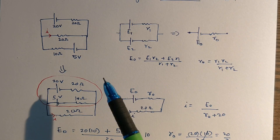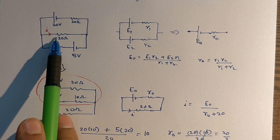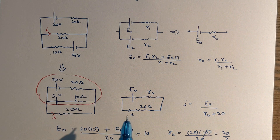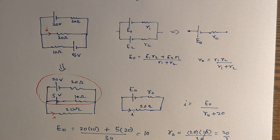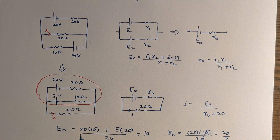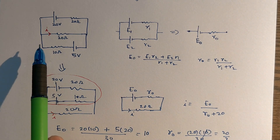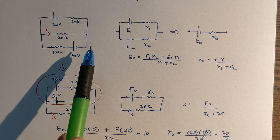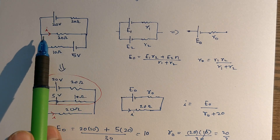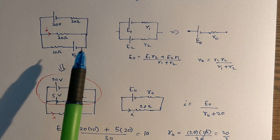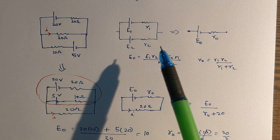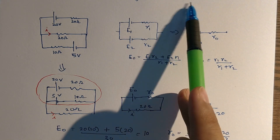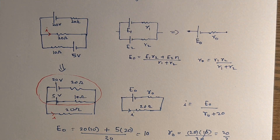This parallel cells method is most useful when the question asks for current in only one branch. If you want current in all three branches, this method becomes quite difficult compared to the nodal method. So it depends on the given question which method to use. If they're asking for current in just one branch, combine the other two branches using the parallel cells method.